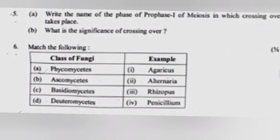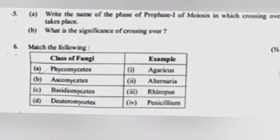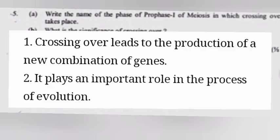Question 5A: Write the name of the phase of Prophase 1 of meiosis in which crossing over takes place. Answer: Pachytene. Question 5B: What is the significance of crossing over? Answer: One, crossing over leads to the production of a new combination of genes.